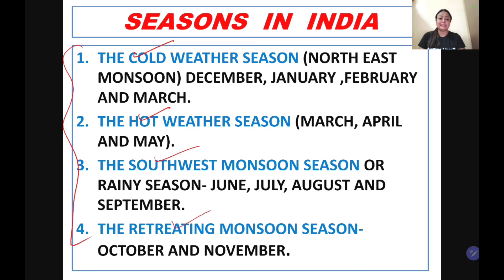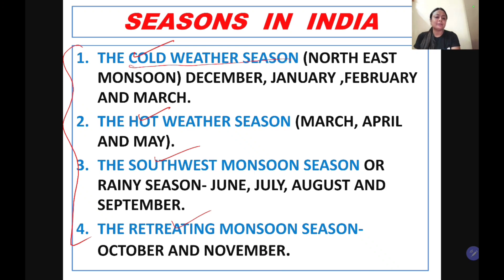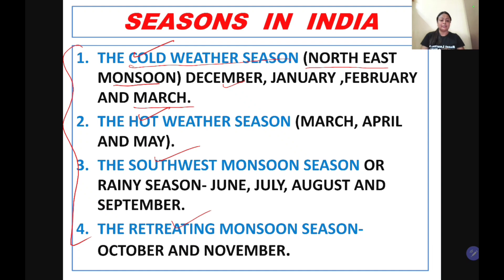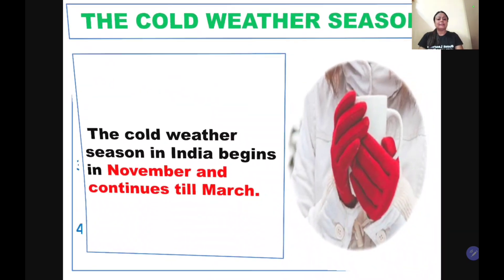We can see that monsoon has an important role in India and prevails for a very long period of time, affecting the Indian climate. The cold weather season, which we also know as the Northeast monsoon season, is from the end of November or December and continues till March. Let's read more about this season.